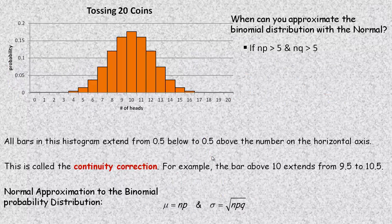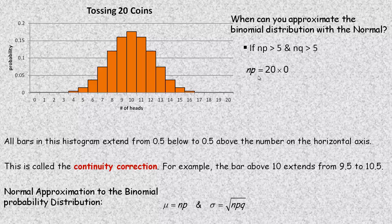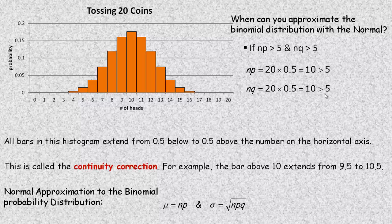On the second page, here's the tossing 20 coins graph again. In the top right-hand corner is the question: when can you approximate the binomial distribution with the normal? The test is: if NP is greater than 5 and NQ is greater than 5. In this case N is 20 and with a fair coin P is 0.5, so NP equals 20 times 0.5 which is 10 — greater than 5. NQ is also 10, greater than 5, so we're good.